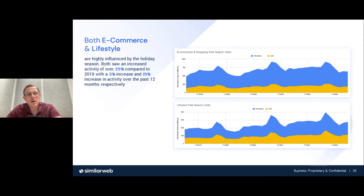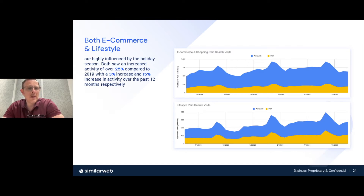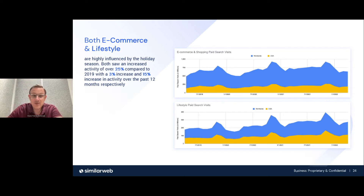E-commerce and lifestyle show those huge waves — almost like being in Hawaii — during the holiday seasons. Every time there's a wave like that, it's almost doubling the baseline, and the waves are getting bigger while the baseline grows too. E-commerce and lifestyle have seen 25% increase compared to 2019, with a 3% and 15% increase respectively in activity over the past 12 months. E-commerce is driven heavily by terms like Amazon, Target, and other large retailers.